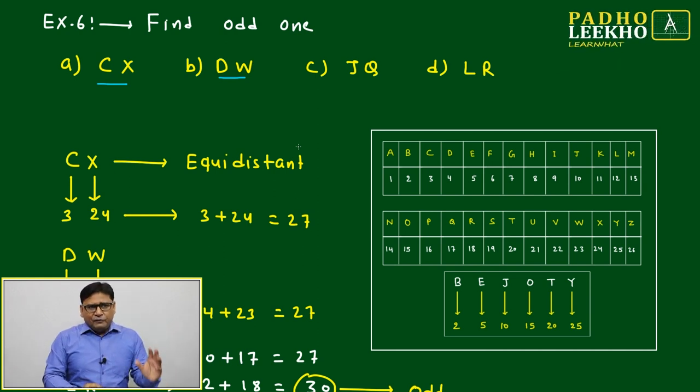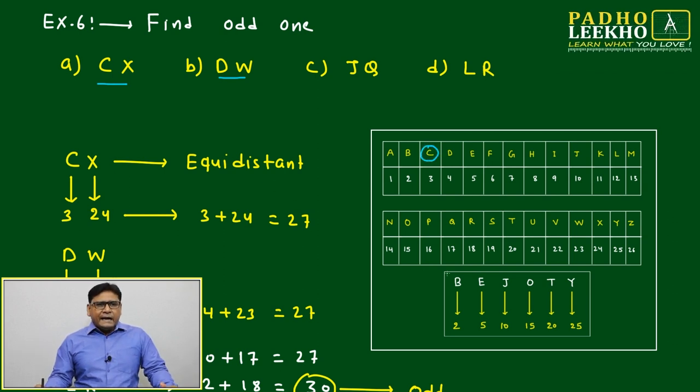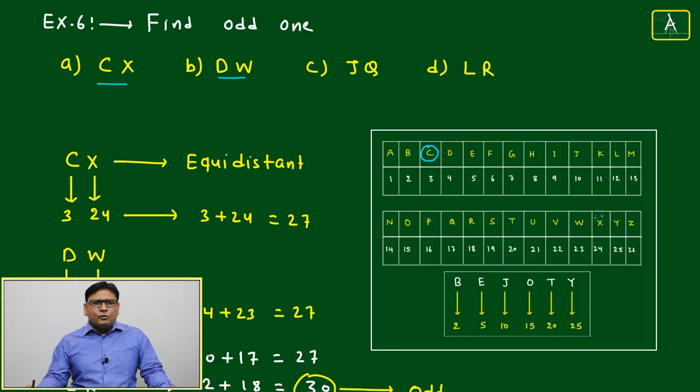If it is working, then we can mark it is following a certain relation. Like here, C is third position from the start and X is also third position from the end.